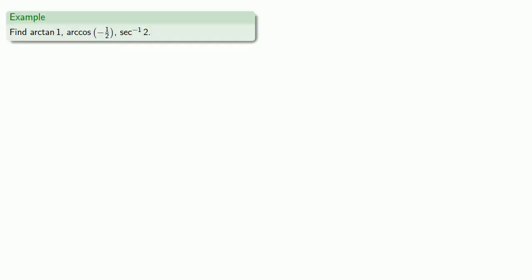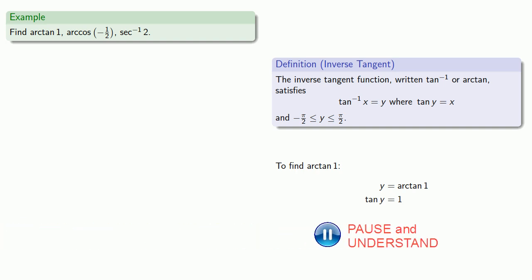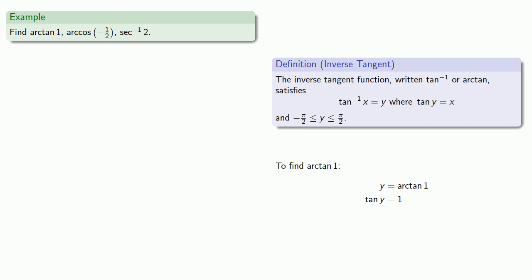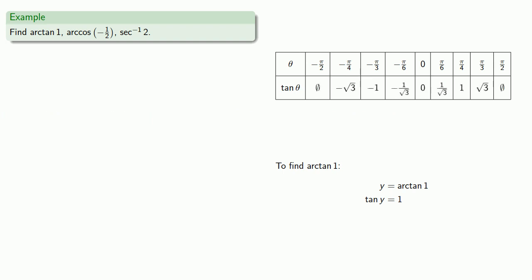Let's find arctangent of 1, arc cosine of negative 1/2, and inverse secant of 2. Definitions are the whole of mathematics; all else is commentary. Arctan is another way of writing the inverse tangent function. To find arctan of 1: if y is arctan 1, then tangent of y is equal to 1. Since y has to be between minus pi over 2 and pi over 2, we see that tangent is 1 at pi over 4.